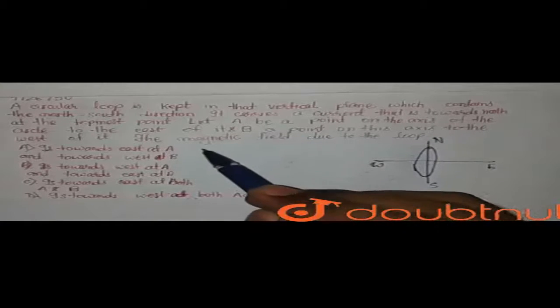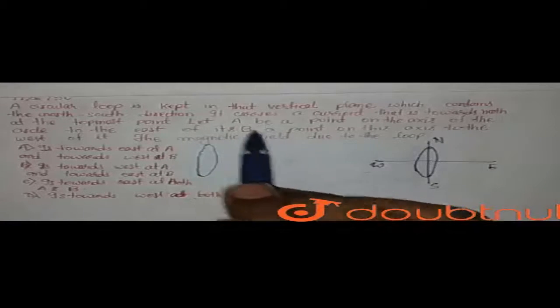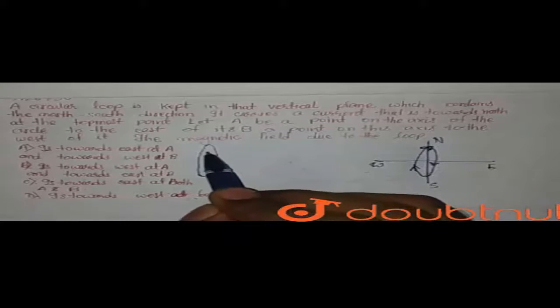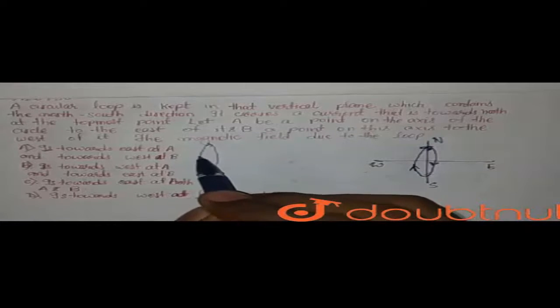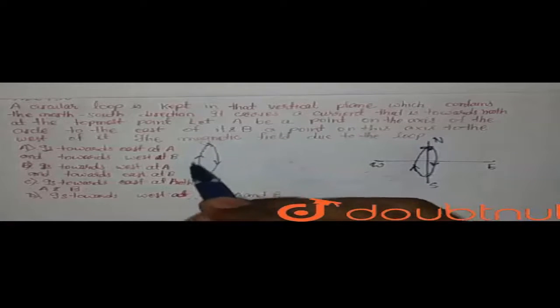You can understand that the loop is kept in this direction. The current is towards north at the topmost point. So if this direction is going from within here, then the direction of current will go around. The direction of current is just this way. Because of this current, the magnetic field will be generated. Where is point A and point B?